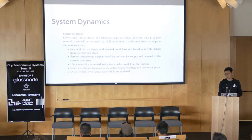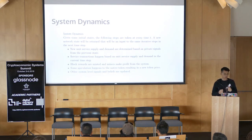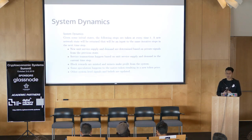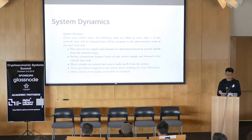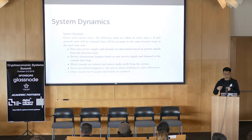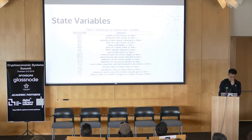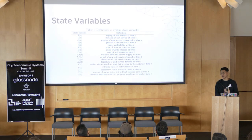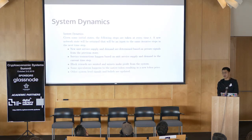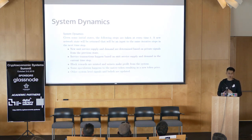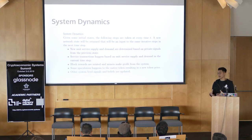From there we define the system dynamics. At every time step, the following things happen: some unit service supply and demand arrive at the network, driven by the private signals of all the different agents in the system. Then some transactions happen for the services given the unit service supply and demand. Block rewards are minted and miners make a profit RT — basically how profitable it is to provide that service in the network. Then some speculation might happen that changes the token price, which also changes private signals about profitability or how cheap or expensive the service is being provided on the network.